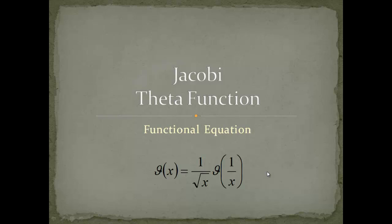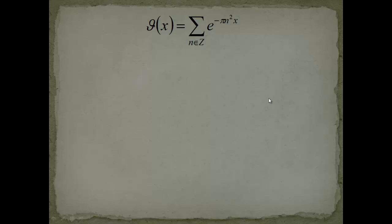The theta function follows this functional equation: theta of x is equal to 1 over square root of x, times theta of 1 over x. You look at it and wonder why one needs this in the proof of Riemann's functional equation for the zeta function. This functional equation allows us to solve for the Riemann functional equation of the zeta function.